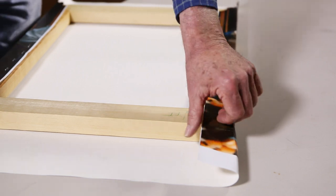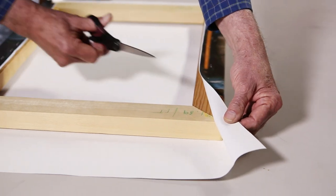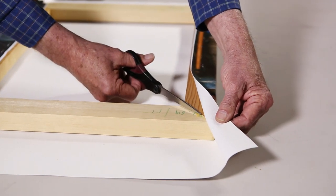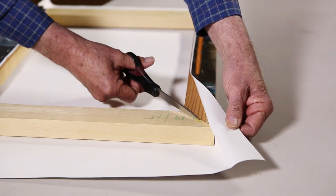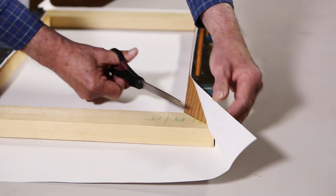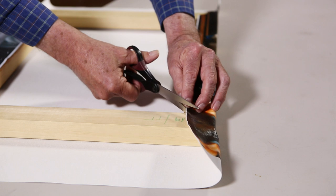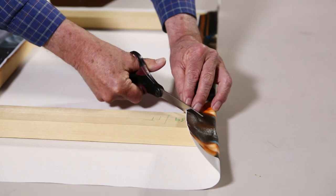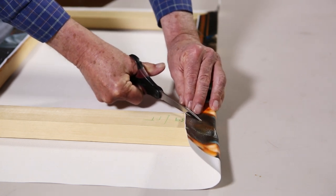The first step in making the corners is to locate this diagonal line on the frame, and I want to cut about halfway on that diagonal line. I'm going to fold it back and I'm going to cut the canvas about halfway on that diagonal line.